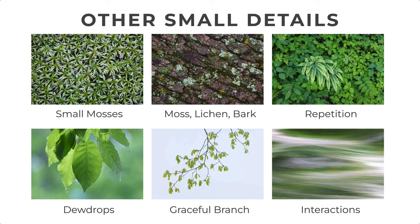Telephoto lenses can sometimes be used like a macro lens, depending on how close they can focus. Most of the photos shown here were photographed with my 100-500 lens — it's a very versatile tool for photographing smaller scenes in nature. For example, the photo with the dew drops is a very small section of leaves, and I can still get pretty close to get a nice blurry background even with a 100-500. If you have a tool like that, I'd encourage you to consider using it for some of the smaller details as well.